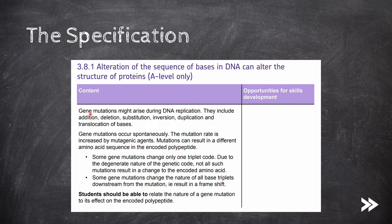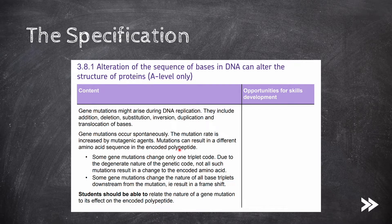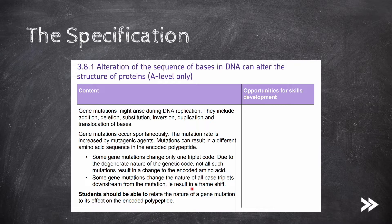We need to know that gene mutations might arise during DNA replication. They include addition, deletion, substitution, inversion, duplication, and translocation of bases. Mutations occur spontaneously, and the mutation rate is increased by mutagenic agents. Mutations can result in a different amino acid sequence in the encoded polypeptide. Some gene mutations only change one triplet code, and because the genetic code is degenerate, not all such mutations result in a change to the encoded amino acid. Some mutations change the nature of all base triplets downstream from the mutation, resulting in a frameshift.